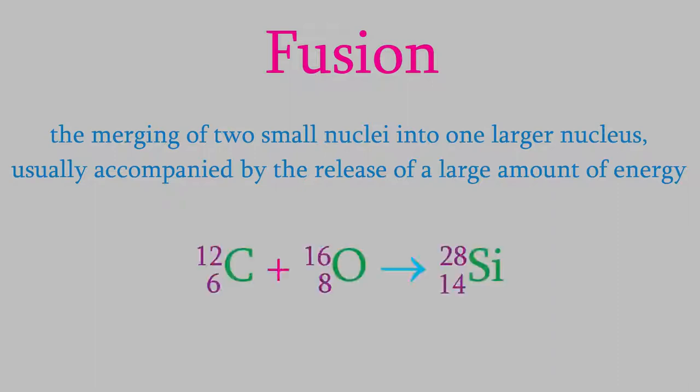For example, here's a fusion reaction in which carbon-12 and oxygen-16 react to form silicon-28. As we saw in video 38, reactions like this one produce a tremendous amount of energy, but also require huge amounts of energy in order to initiate them. In fact, the technology necessary to produce commercial power using fusion reactions is still too expensive to be practical.